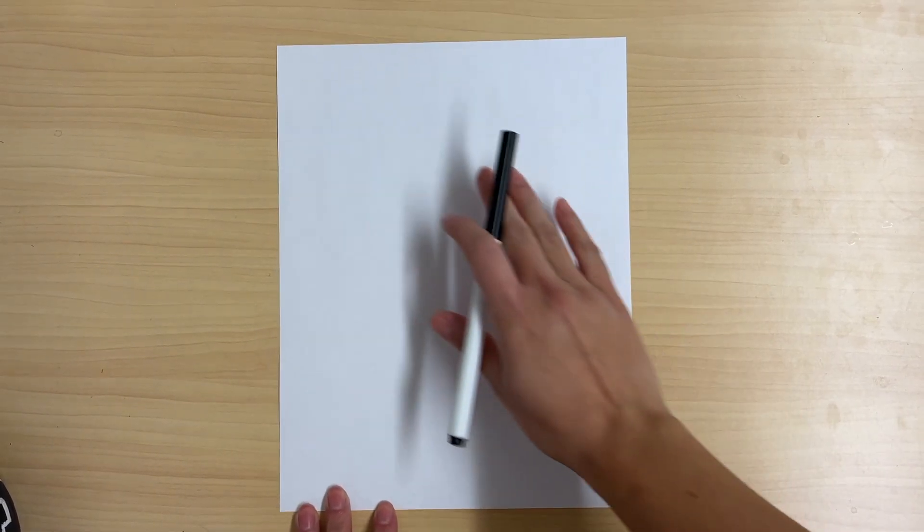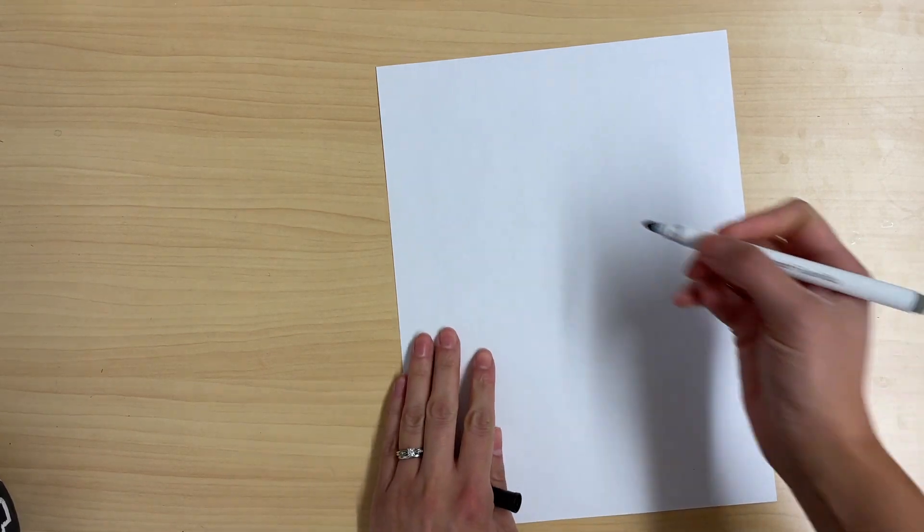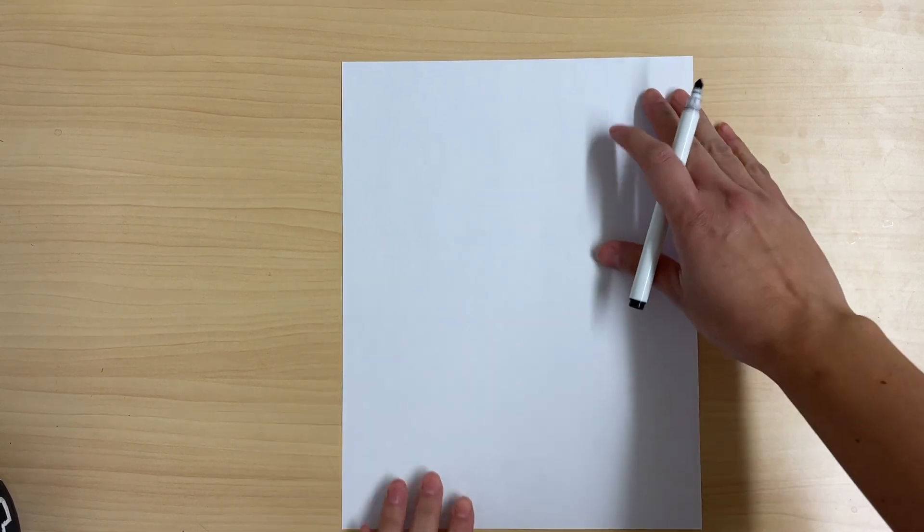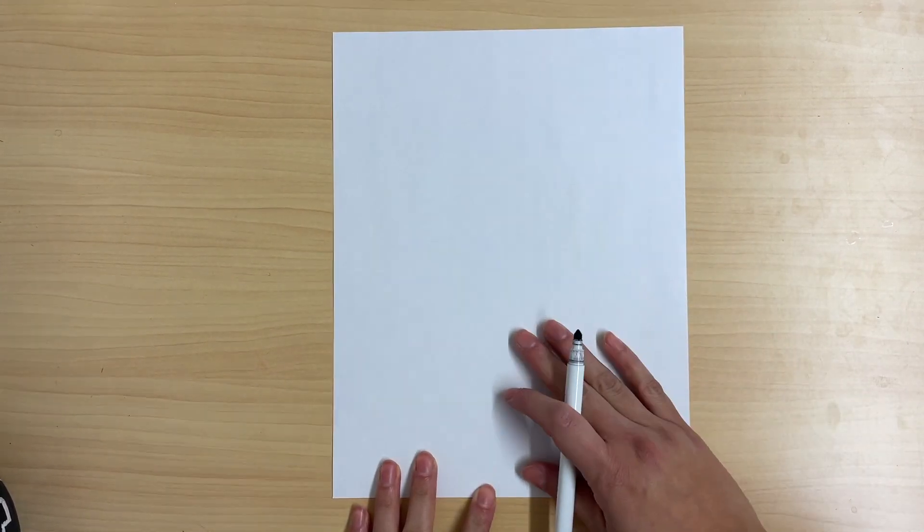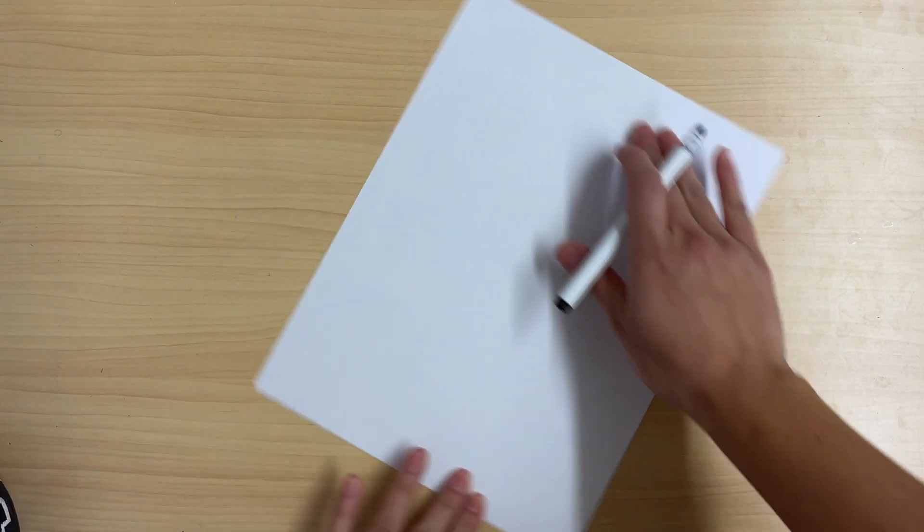To begin we're going to start by drawing the hat that our penguin is going to be wearing. So find the top of your paper and notice my paper is standing up tall like this. It's not sideways like this.